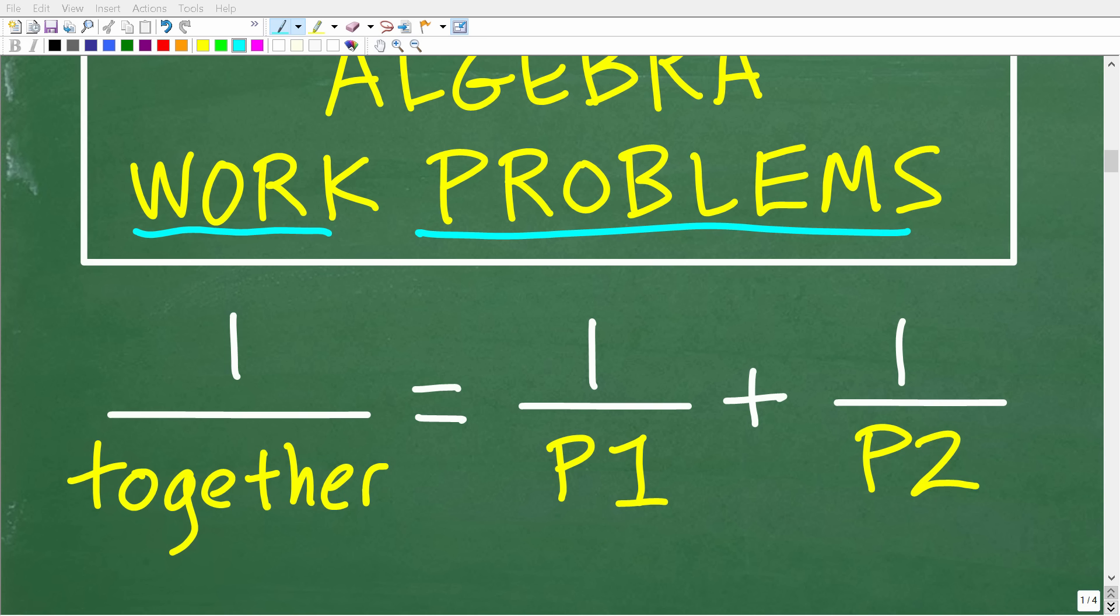The way this formula works is the following. So, let's say there is some job that is getting done, some work that needs to be accomplished. And let's suppose we have two people. Now, let's say person one can do this job in this time and person two can do the same job in this time. We're going to call the time person one can do that time P1 and we'll call P2 the time the other person can do the same job.